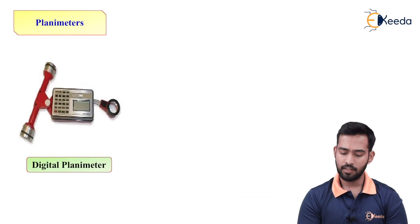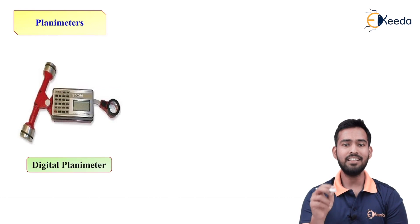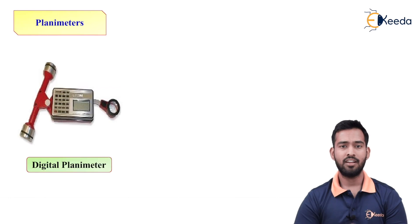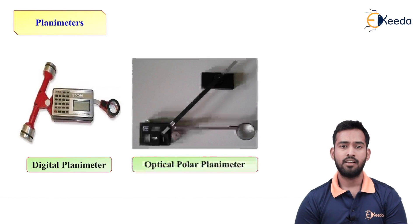In this, we have a keyboard. By using this keyboard, we can set the required scale, the required unit, and you can calculate the area directly by simply tracing the boundaries of your irregular shape figure or the map. So digital planimeter will give us accurate readings with less time and less calculations.